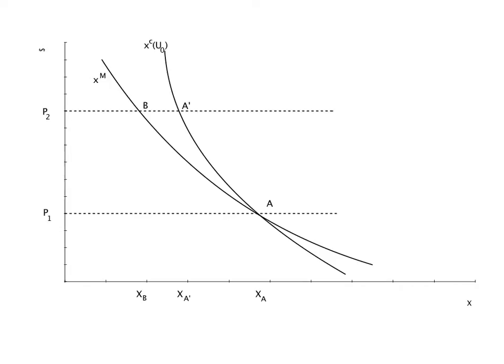And A and A prime lie on the compensated demand curve, the level of X the consumer would choose at each price if she were compensated with just enough income to maintain utility at U naught, the level of satisfaction enjoyed at P1.